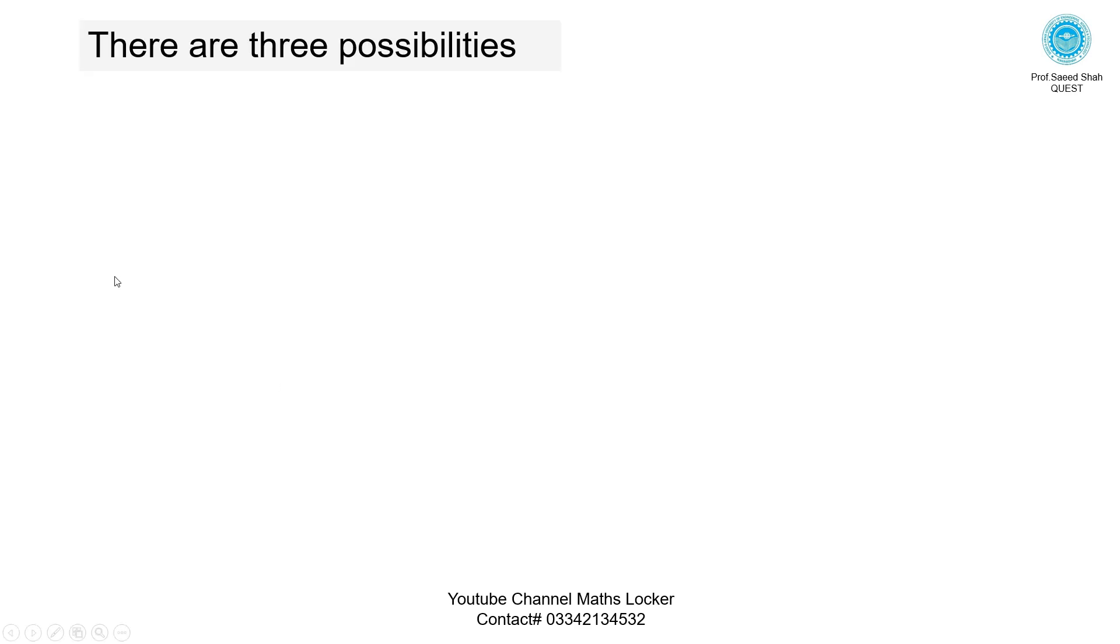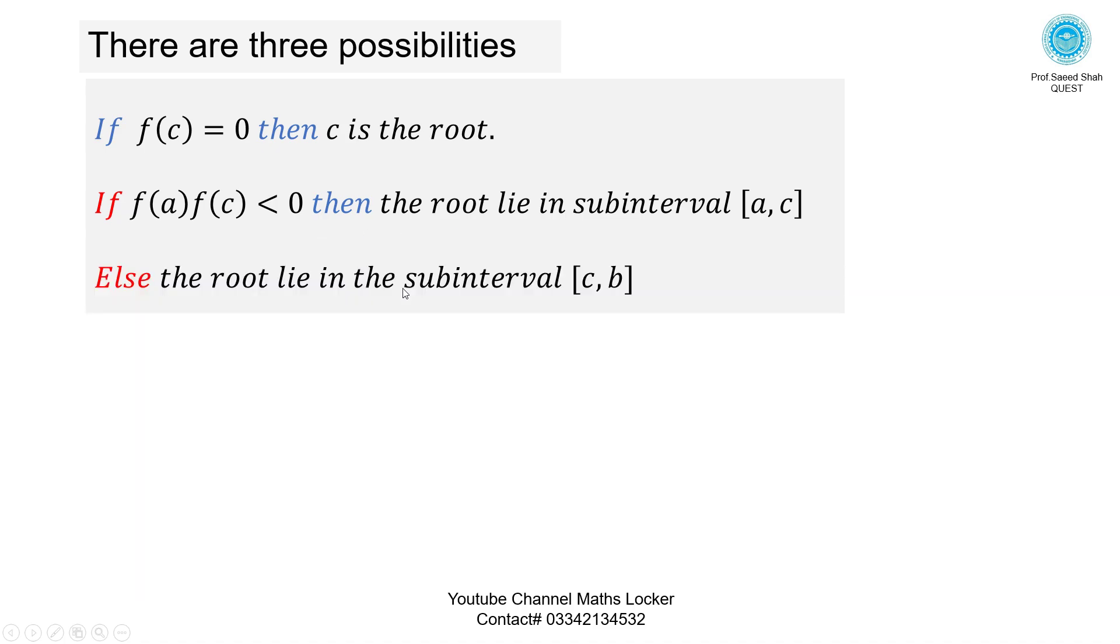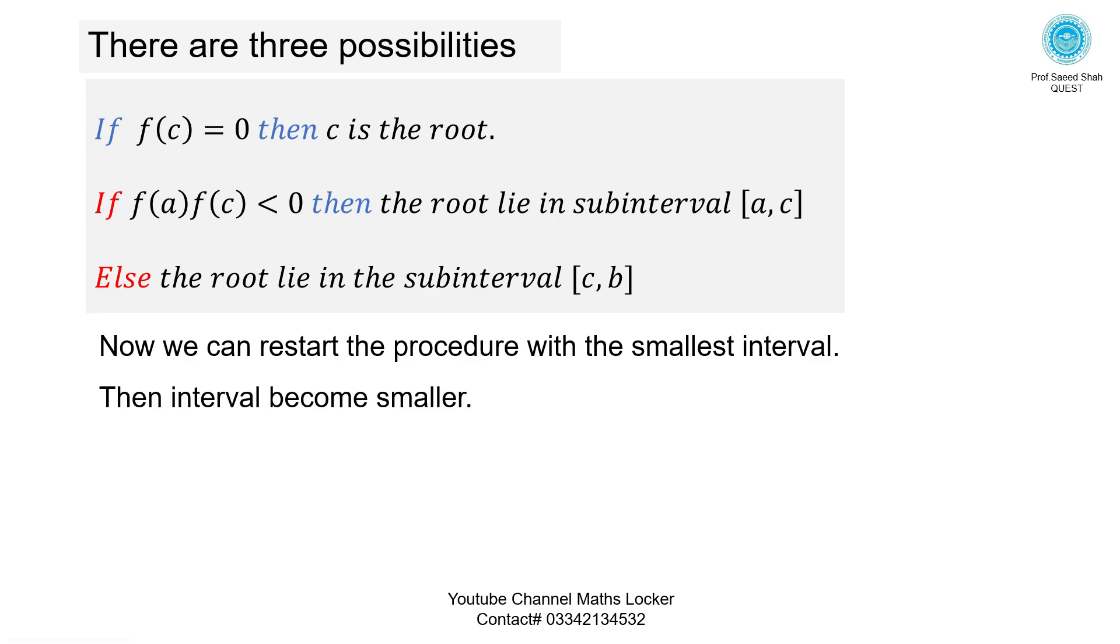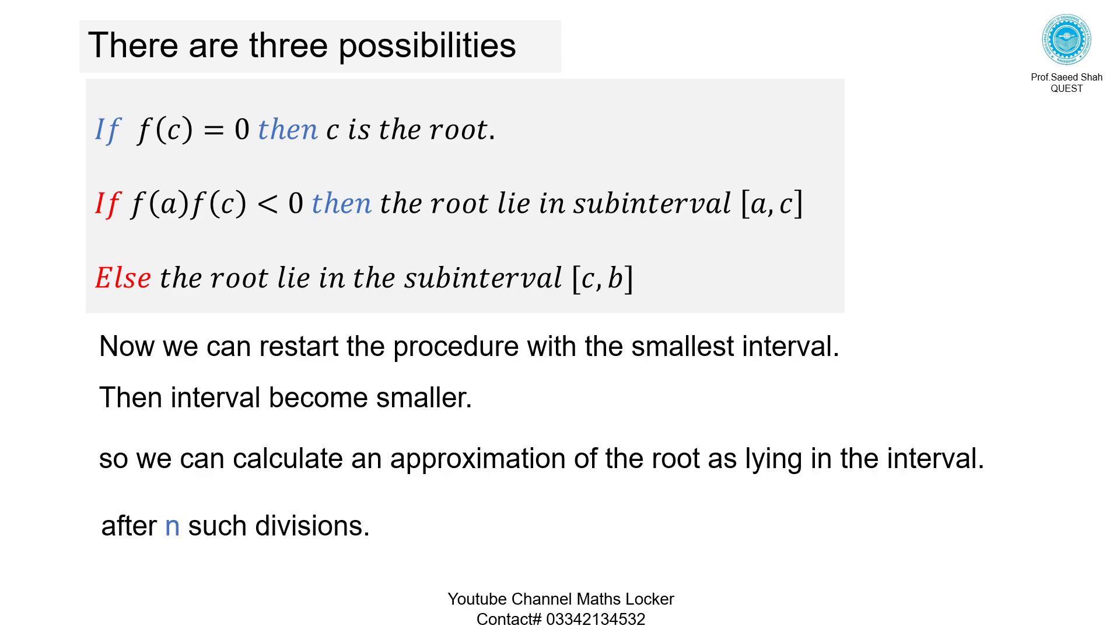There are three possibilities: If F of C equals 0, then C is the root. If F of A times F of C is less than 0, then the root lies in sub-interval AC. Else the root lies in sub-interval CB. Restart the procedure with the smallest interval. The interval becomes smaller, so we can calculate an approximation of the root after n such iterations.